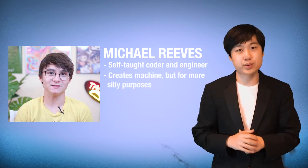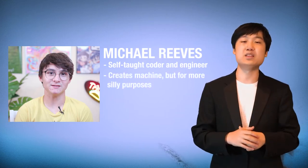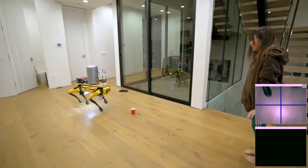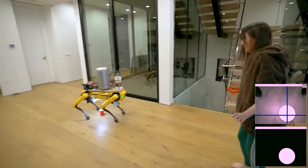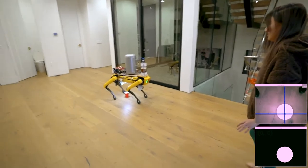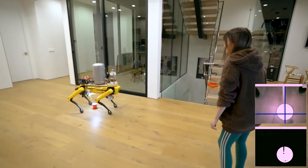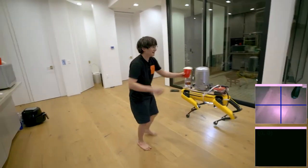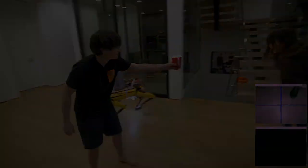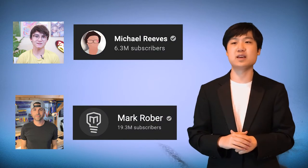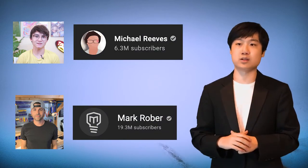Another is Michael Reeves, a self-taught coder and engineer who also creates machines, but for more silly purposes, like a robot dog that pees beer. Both of them are incredibly successful, possessing millions of subscribers and being some of the most popular YouTubers on the platform.